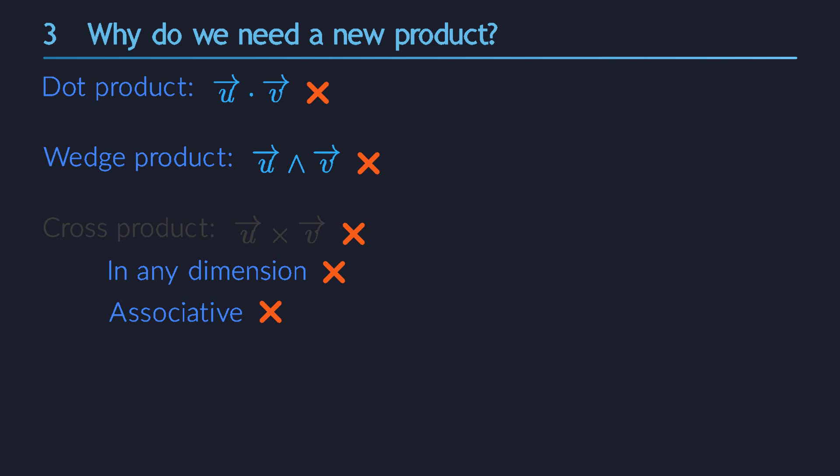It's called the geometric product, or also sometimes the Clifford product. We write it without a symbol. So whenever I place two vectors side by side in an expression, it's always a geometric product.